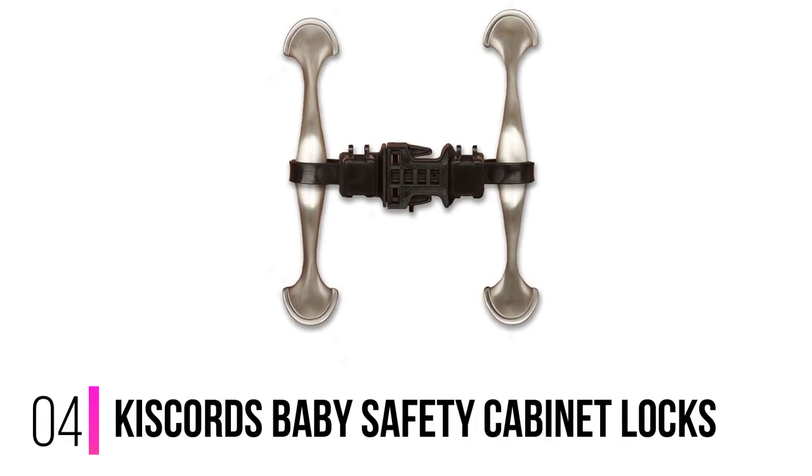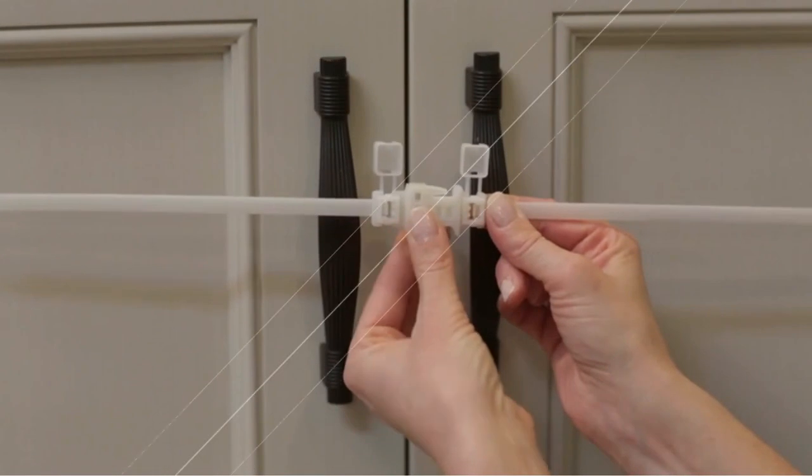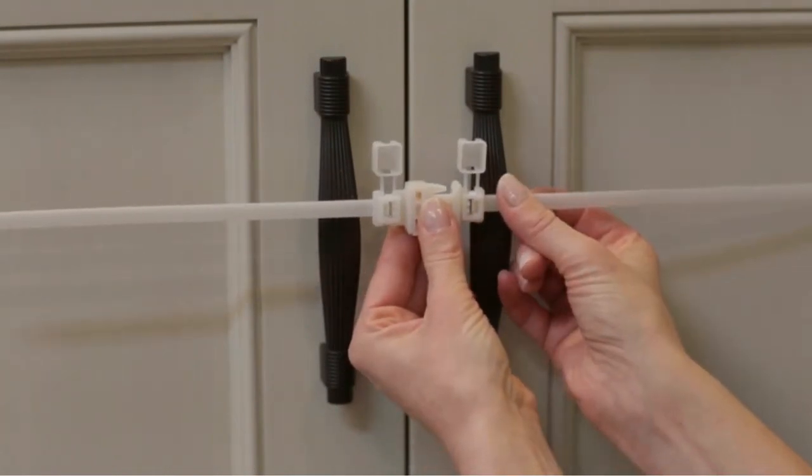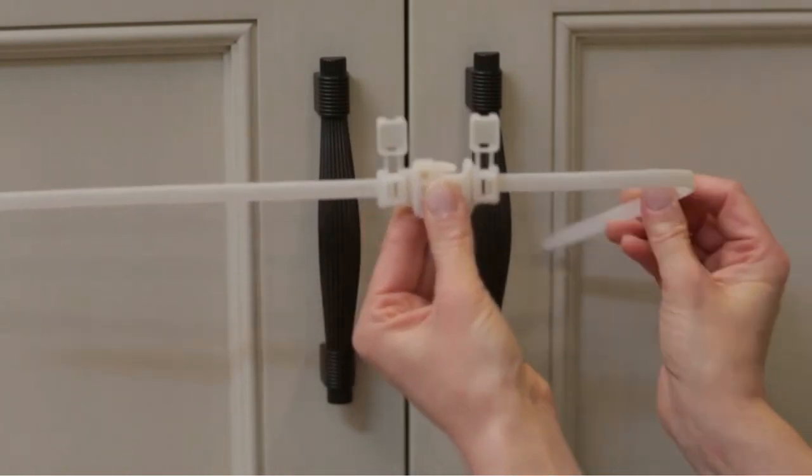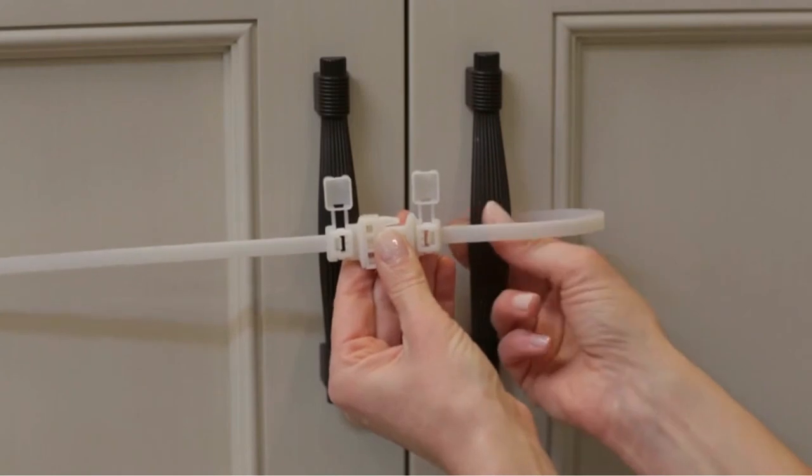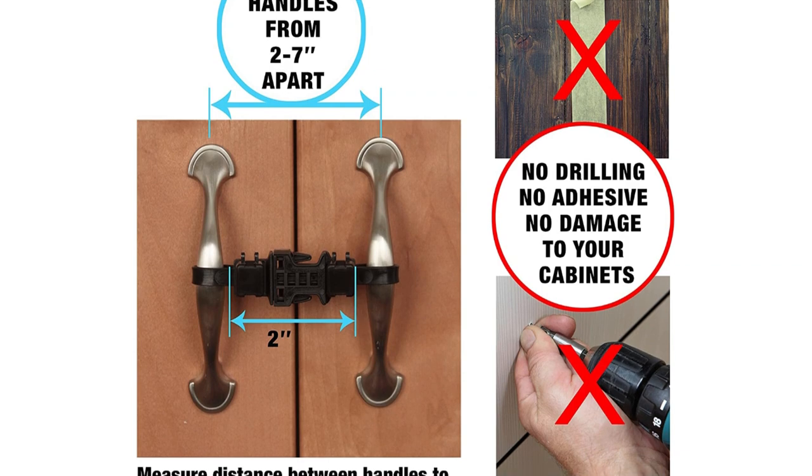Number four: Kiscord's Baby Safety Cabinet Locks. Kiscord's Baby Safety Locks are a great option for temporary baby-proofing that won't leave a mark on your cabinets. You can also tote them to family and friends' homes when visiting or when they're babysitting. One downside is that these locks only work on cabinets with handles.